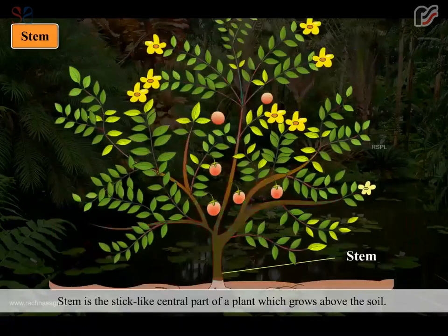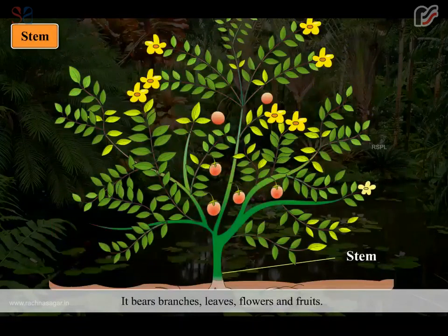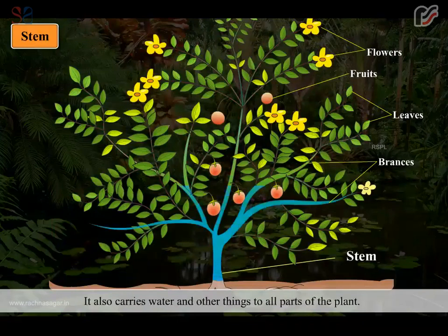Stem is the stick-like central part of a plant which grows above the soil. It bears branches, leaves, flowers and fruits. It also carries water and other things to all parts of the plant.